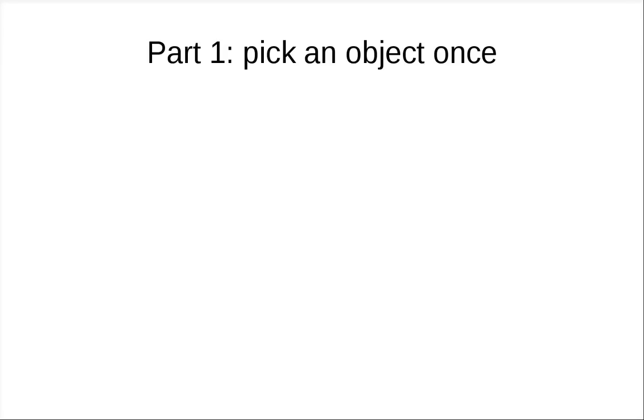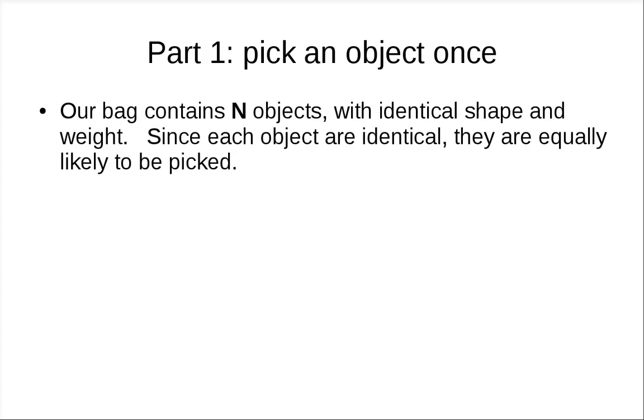In this model, we will have a bag with a bunch of objects inside, and we will pick one object out of the bag without looking, and we will try to reason about the probability of getting objects with certain properties. In this simple model, we have a bag that contains N objects. They all have identical shapes and weight, so that we are equally likely to pick any one of them.